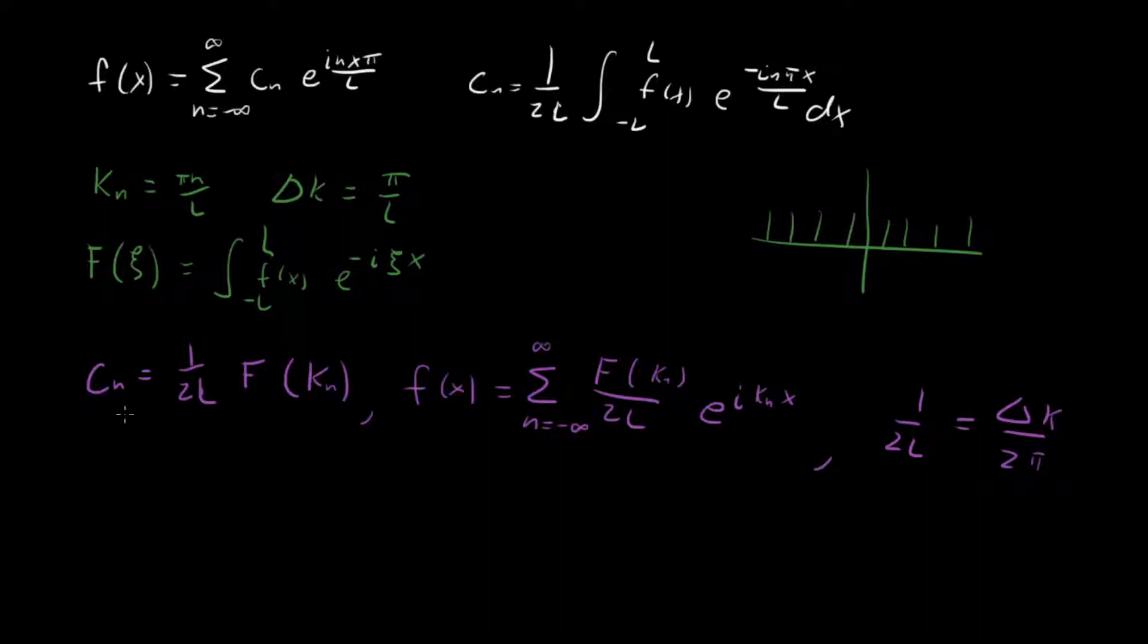So that means that our f of x, or our Fourier series for f of x is now equal to sum n equal minus infinity to infinity. And then we have 1 over 2 pi coming from this, we have f of kn, e to the i kn x, and delta k. You know, this is all fun, and we haven't done anything radical, right? We've just relabeled some stuff and written things in this form. This is still exactly the same as the Fourier series we had before.